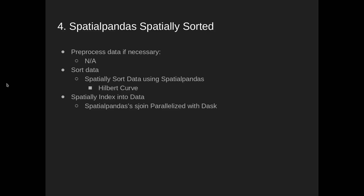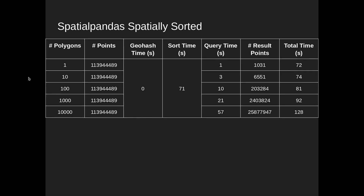The last case is SpatialPandas with a spatially sorted approach. No preprocessing is needed — we sort directly using the Hilbert curve. Results are measured in seconds rather than minutes. Sorting the 114 million rows took just over a minute, and all query times were also under a minute. The number of result points was identical to the unsorted case and the sorted geohash with spatial join case.